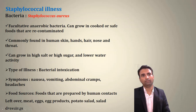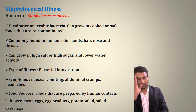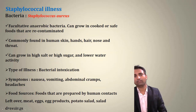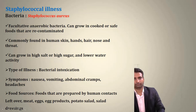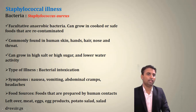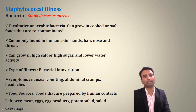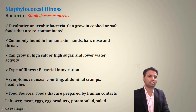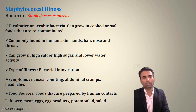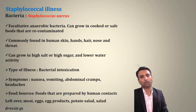Staphylococcus aureus illness is commonly found on human skin, in the nose, and the throat, and can grow in high salt and high sugar environments. The type of illness is bacterial intoxication — the toxin, not the bacteria, enters the food. Symptoms are nausea, vomiting, abdominal pain, and cramps. Food sources include leftover meat, eggs, potato products, and salads.